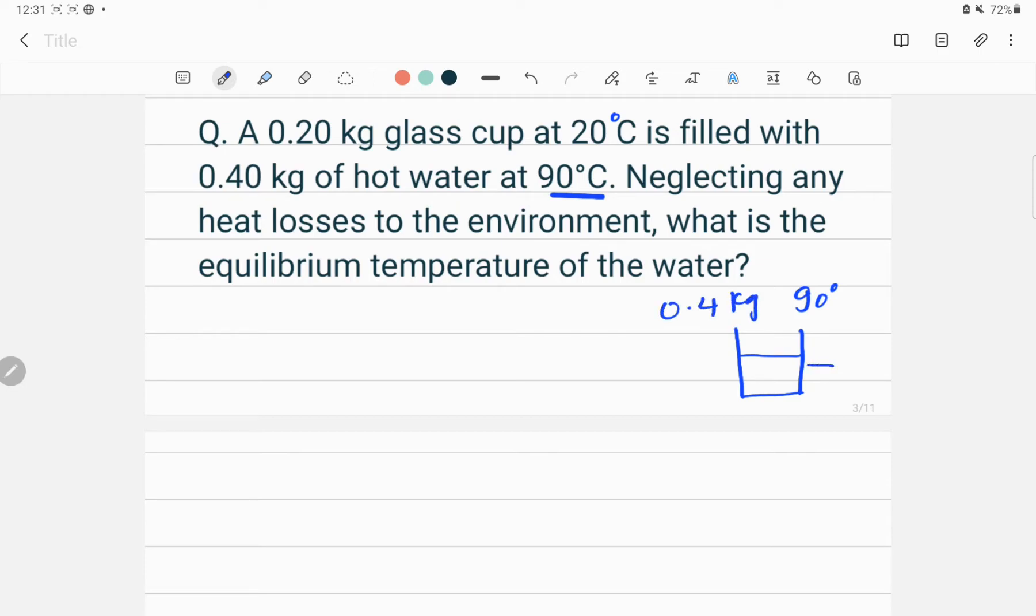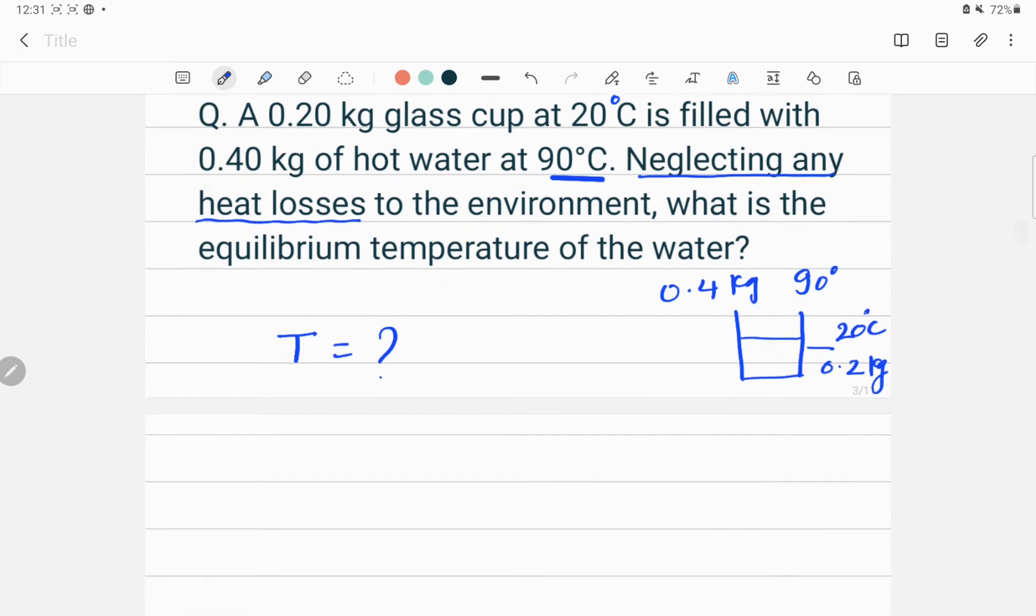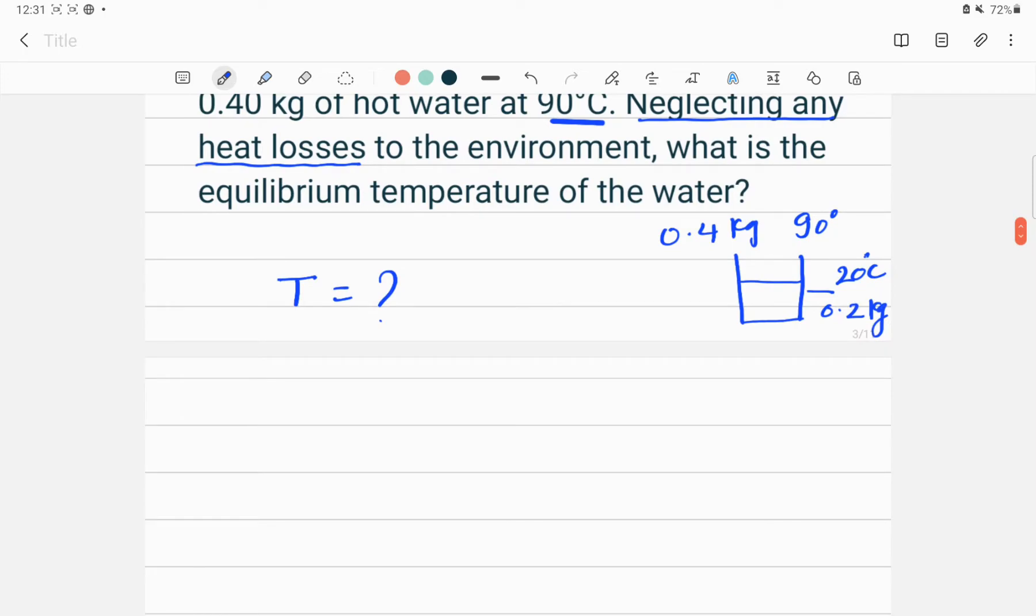This glass itself is at 20 degrees Celsius and having mass 0.2 kilogram. Neglecting any heat losses, that means this system is following the principle of calorimetry. To the environment, what is the equilibrium temperature of the water? Our goal is to find equilibrium temperature which is capital T.